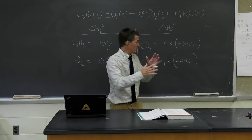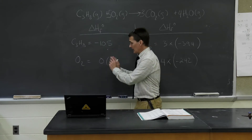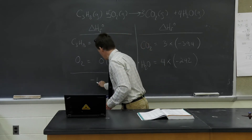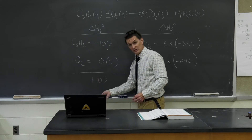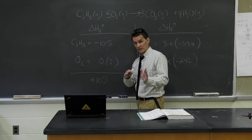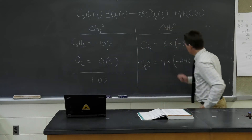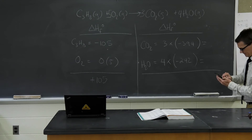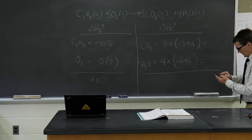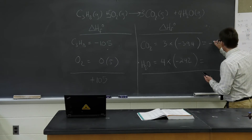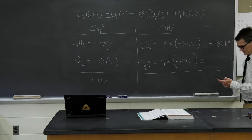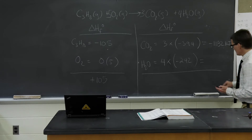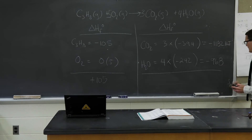We want to remember it's the enthalpy of the products minus the enthalpy of the reactants. Adding up the reactants side is pretty easy: it's 105, but because I'm subtracting it, I change that sign to positive 105. On the products side, we keep all the signs the same. 394, make it negative, times 3 — that's negative 1182 kilojoules. 242, make it negative, times 4 — that's negative 968 kilojoules.